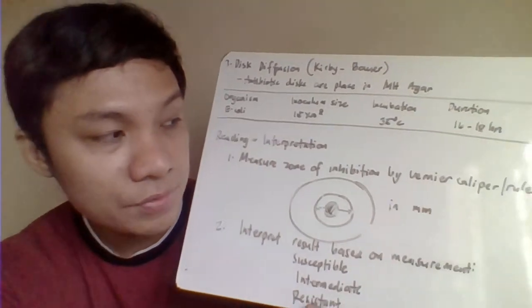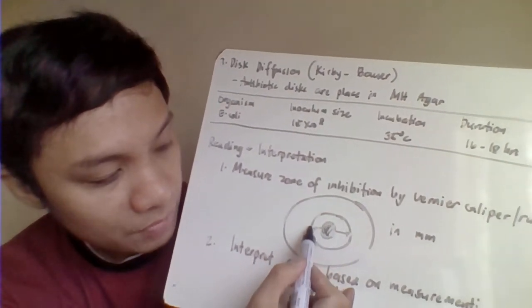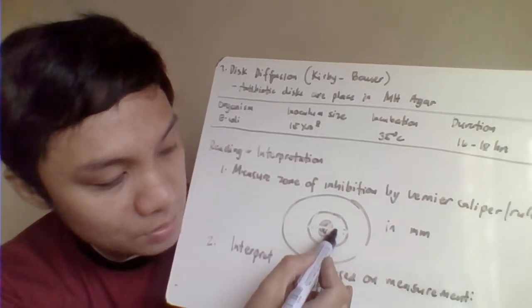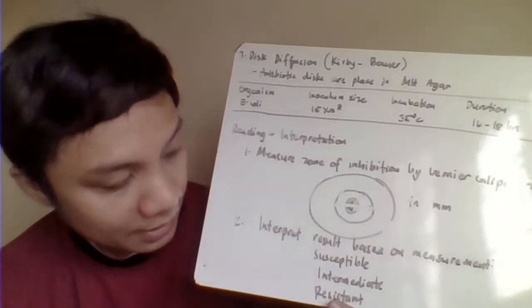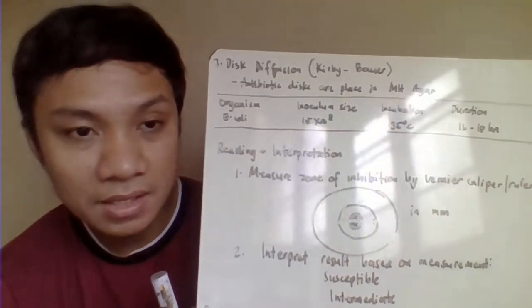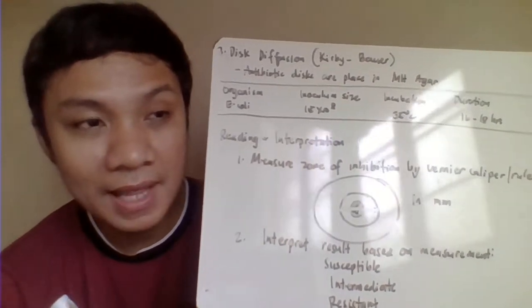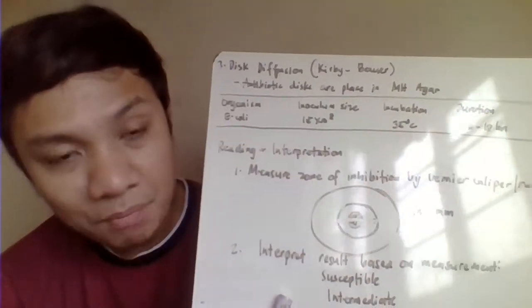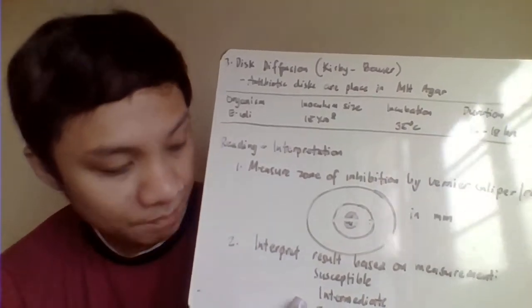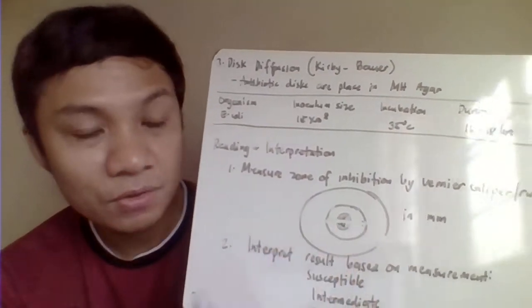When measuring, ensure you measure the full diameter of the zone of inhibition, not just one side. For interpretation, refer to the breakpoint chart based on millimeter diameter. For example, less than 10 mm may be resistant and more than 20 mm susceptible. Report as susceptible, intermediate, or resistant. If susceptible, there is a visible zone of inhibition; if resistant, there is no zone of inhibition.